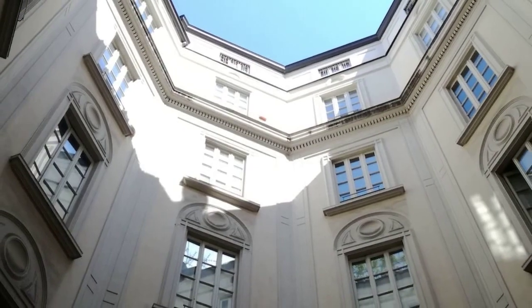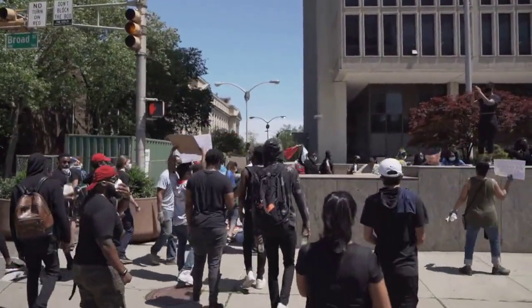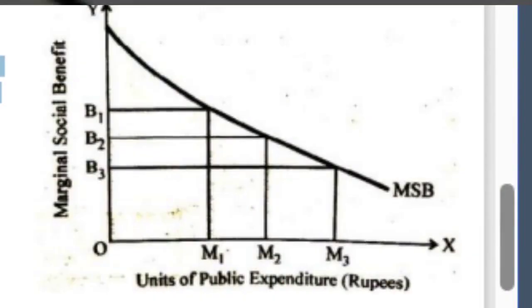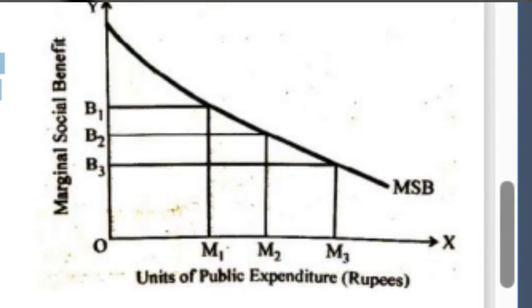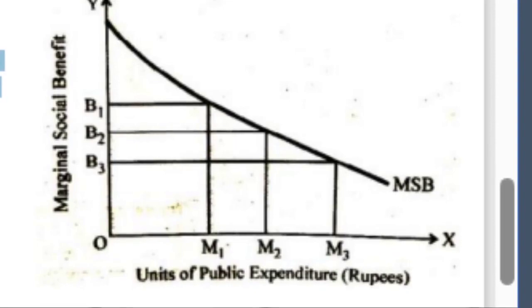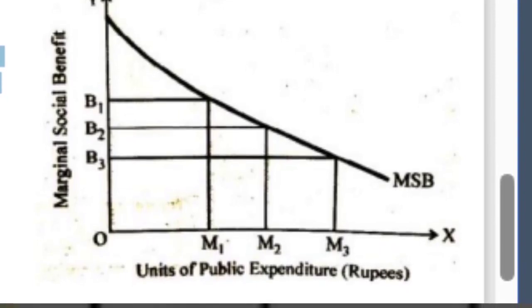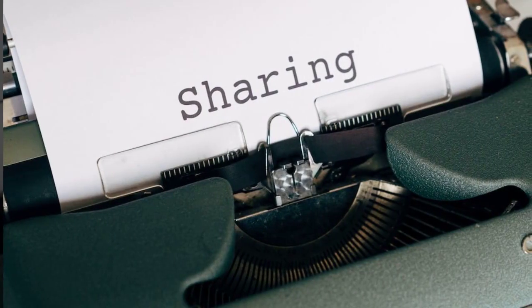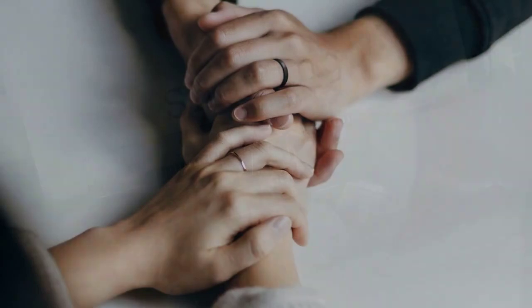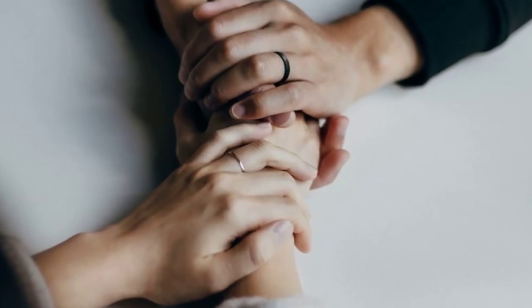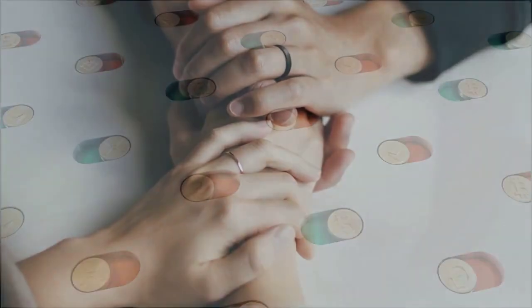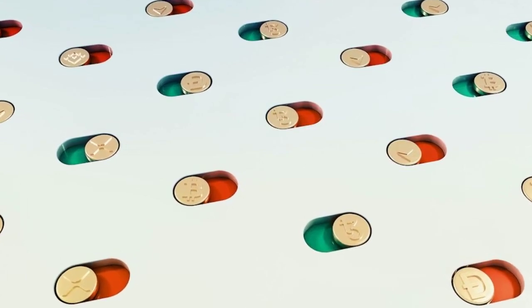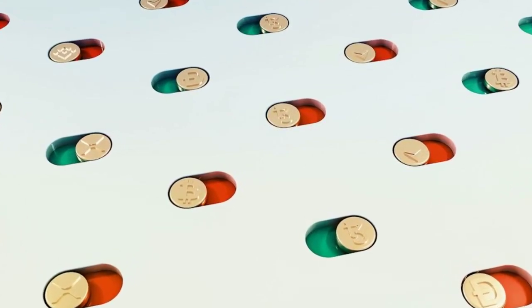Summary: Marginal Social Benefit, MSB, illustrates the declining additional benefits society gains with each extra unit of public expenditure. Visualize this as a curve sloping downward from left to right on a graph, indicating the diminishing returns as public expenditure increases. Stay tuned for more insightful videos, and let's demystify the world of finance together.